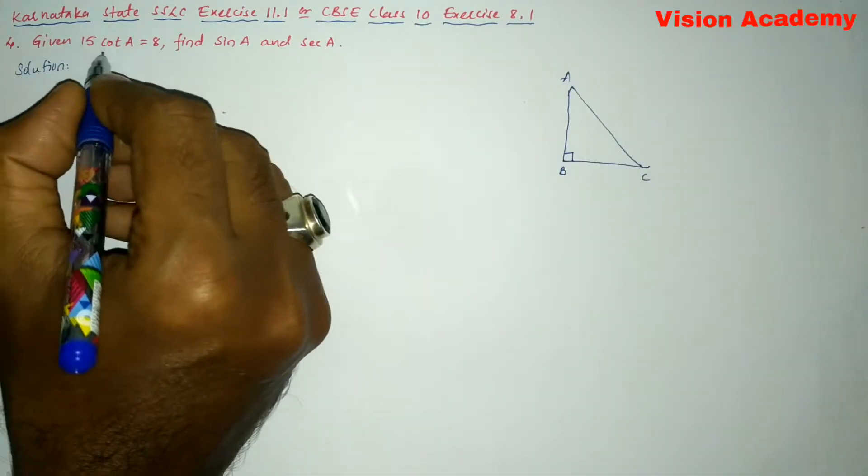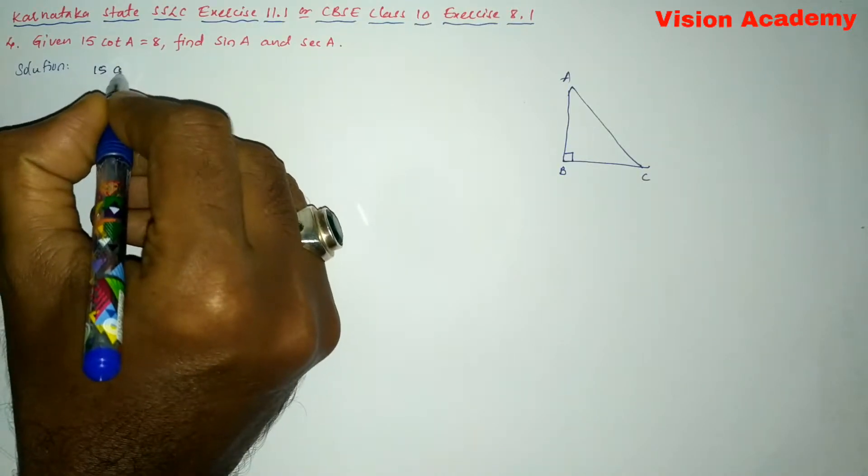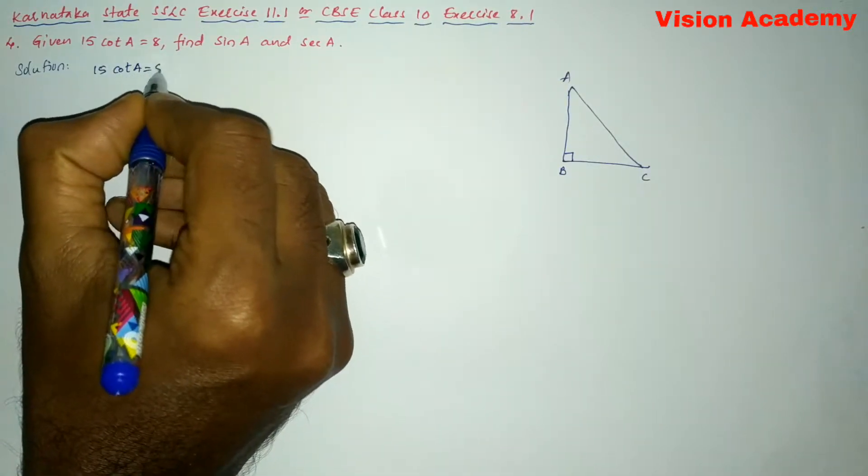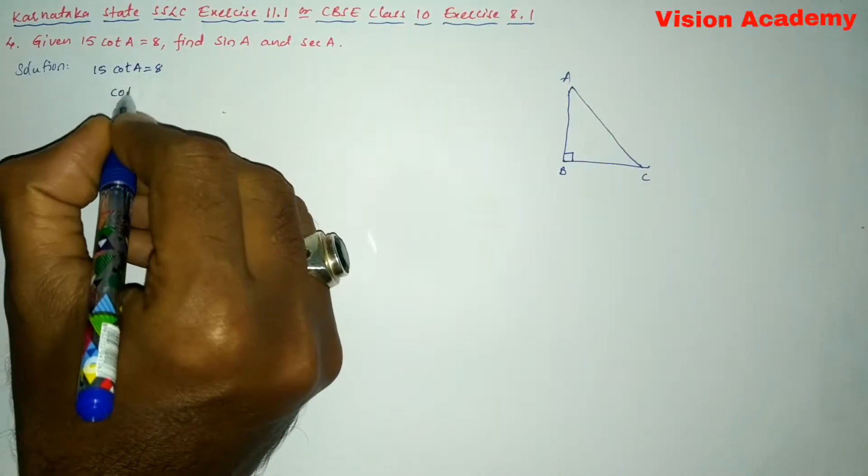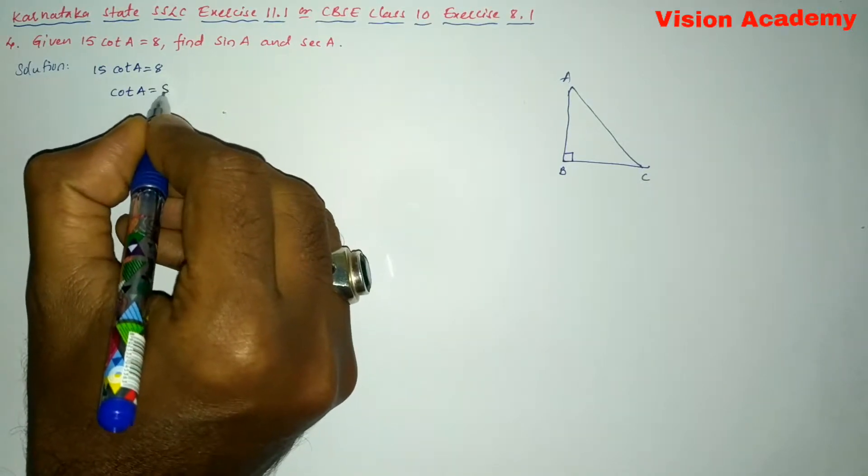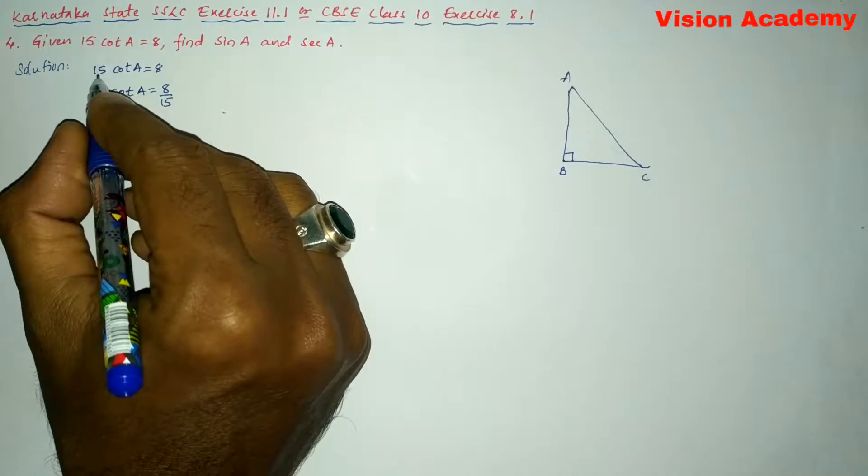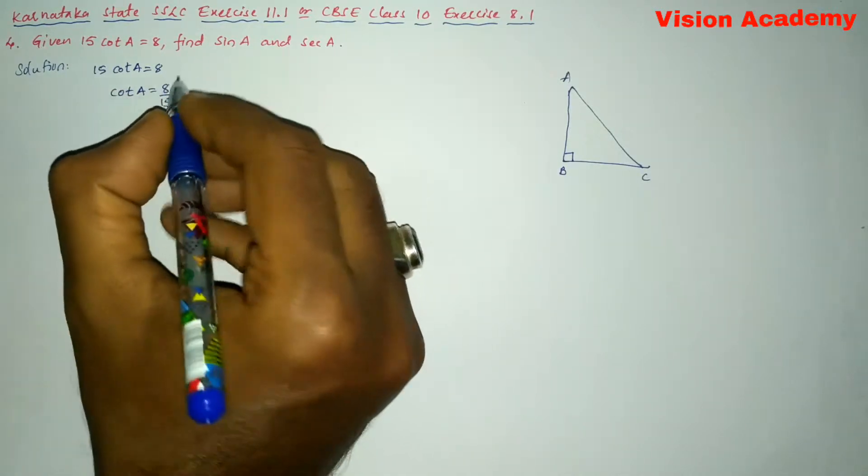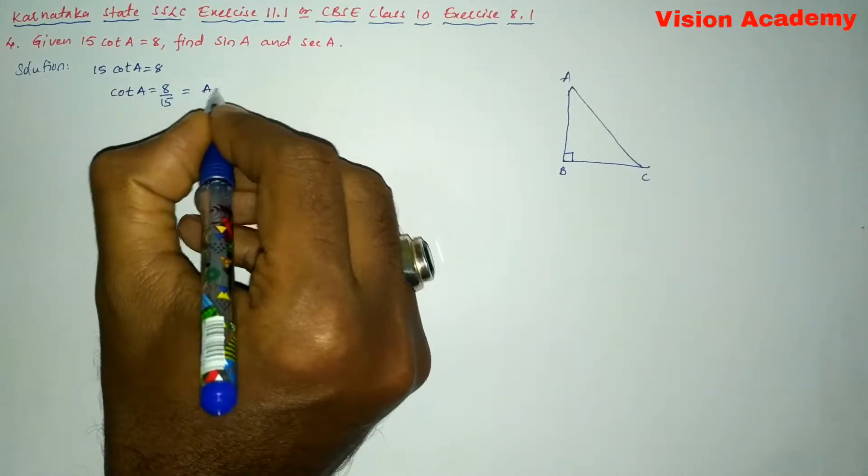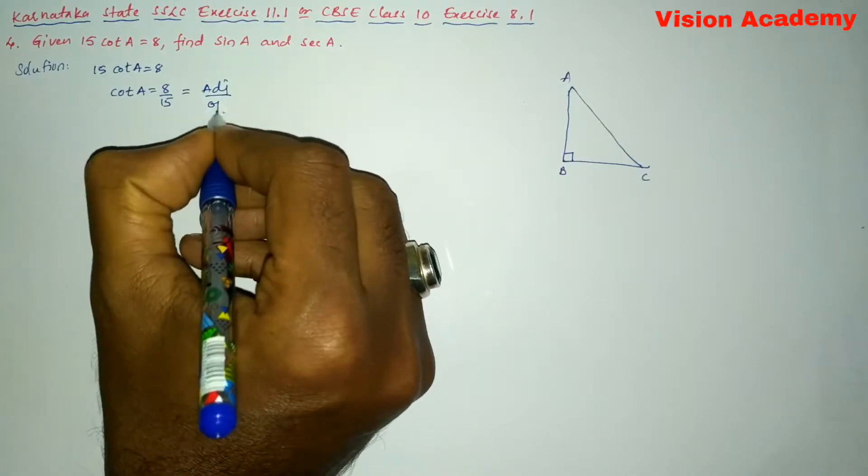Here we have given 15 cot A equals 8. And we can also write this as cot A equals 8 by 15, because we have transformed this 15 from LHS to RHS. So here, cot A equals adjacent by opposite.